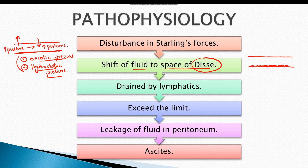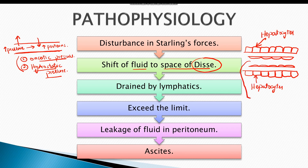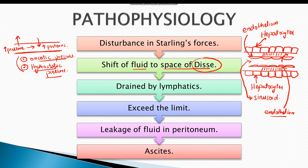The sinusoid is lined on the inside by endothelium, with hepatocytes on the outside and the space of Disse in between. As a result of disturbed Starling's forces, fluid shifts from the sinusoid into the space of Disse. This fluid is drained by hepatic lymphatics into the thoracic duct. In liver cirrhosis, thoracic lymphatic drainage can exceed 20 liters per day; once this exceeds the duct's capacity, fluid leaks into the peritoneal cavity, causing ascites.